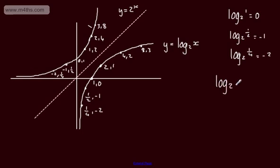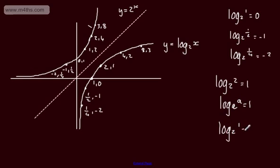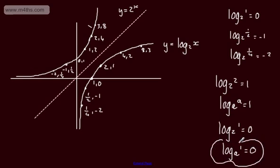Log to the base 2 of 2 equals 1. In general, log to the base a of a equals 1 — what power is a raised by to get a? The answer is 1. Also, log to the base 2 of 1 equals 0 — what power is 2 raised by to get 1? Zero. In general, log to the base a of 1 equals 0. These are two rules we will return to in later videos.